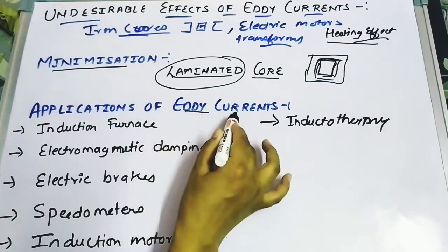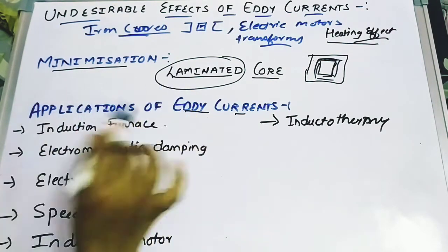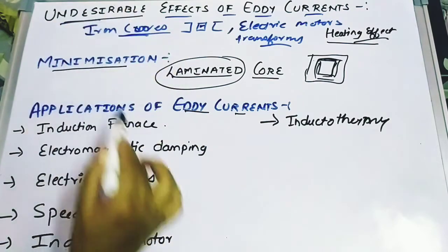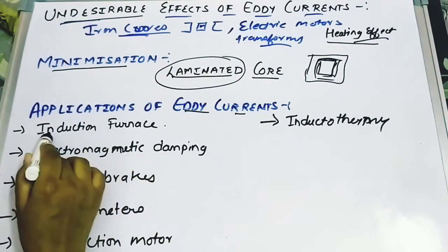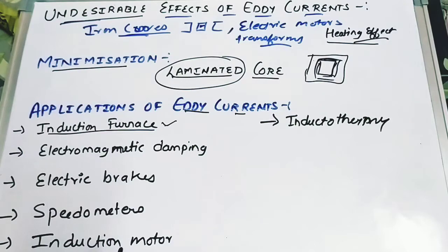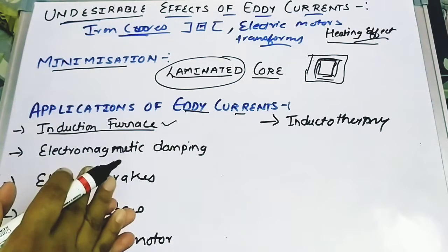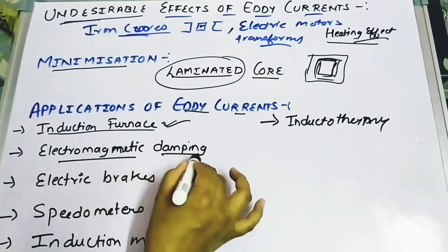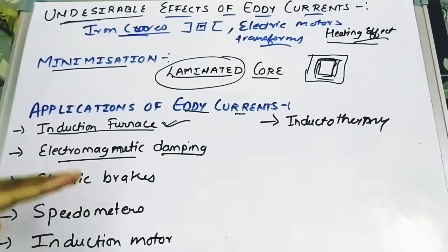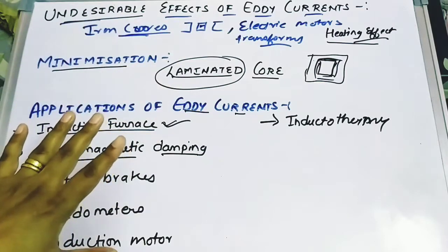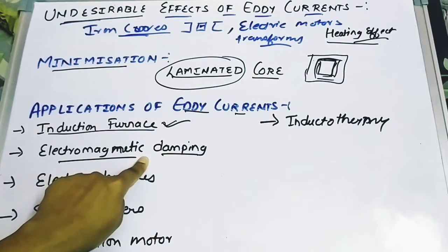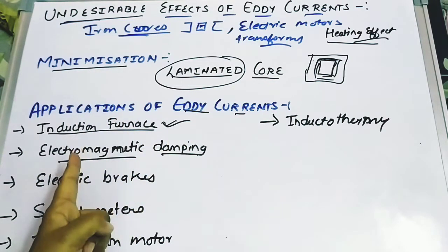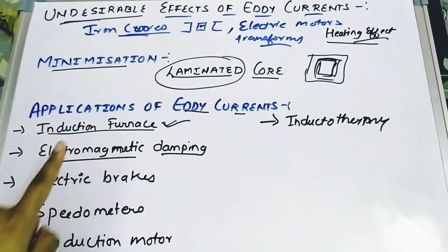Eddy currents have many applications. First, the heating effect — which is the undesirable effect — is used in the induction furnace, which is used for melting metals. A small current flowing through a conductor produces excessive heat that melts the metal. Second, electromagnetic damping: just as we saw with the pendulum, the same damping effect of eddy current is used in a deadbeat galvanometer, allowing it to immediately come to its deflection point.